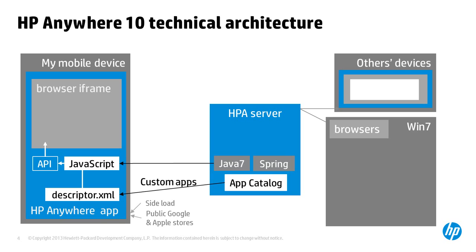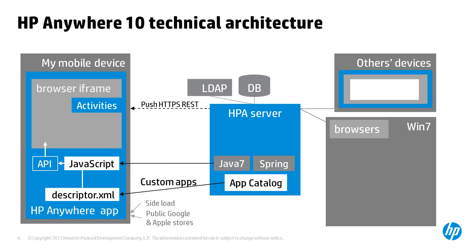The HB Anywhere Tomcat web server makes use of LDAP authentication and uses a central database to enable participants to securely collaborate with the same custom app on others' devices. Threads of collaboration are managed by an activities module, which listens for push notifications sent using Google Cloud to Device Messaging and Apple Push Notification Service.